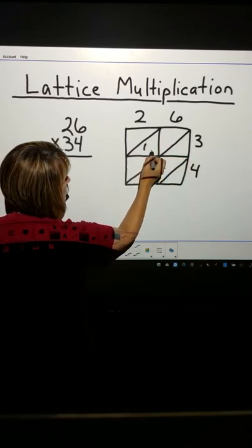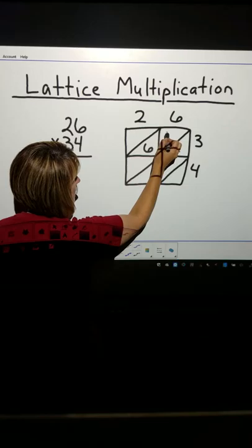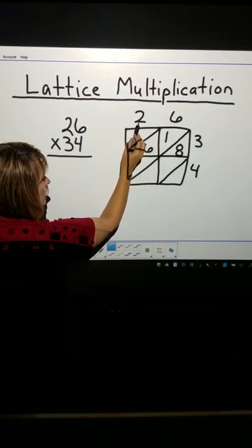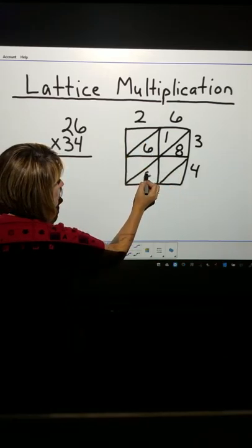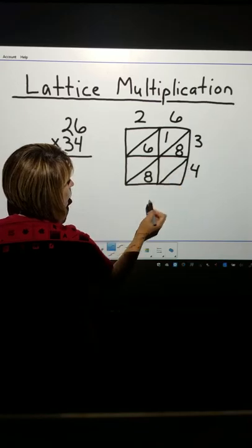2 times 3 will be 6. 6 times 3 will be 18. It's a two-digit number, so I'll have to use both portions. Now, I'm going to the bottom. 2 times 4 will be 8. And, 6 times 4 is 24.